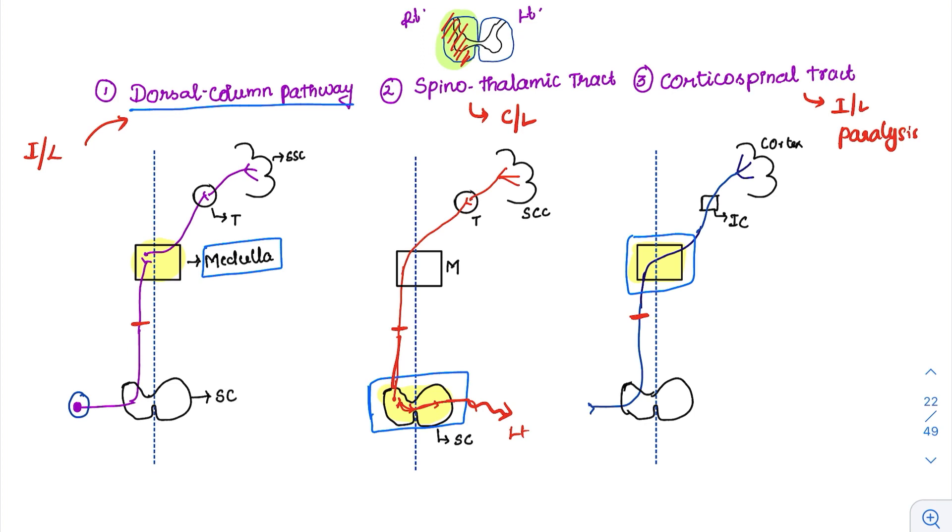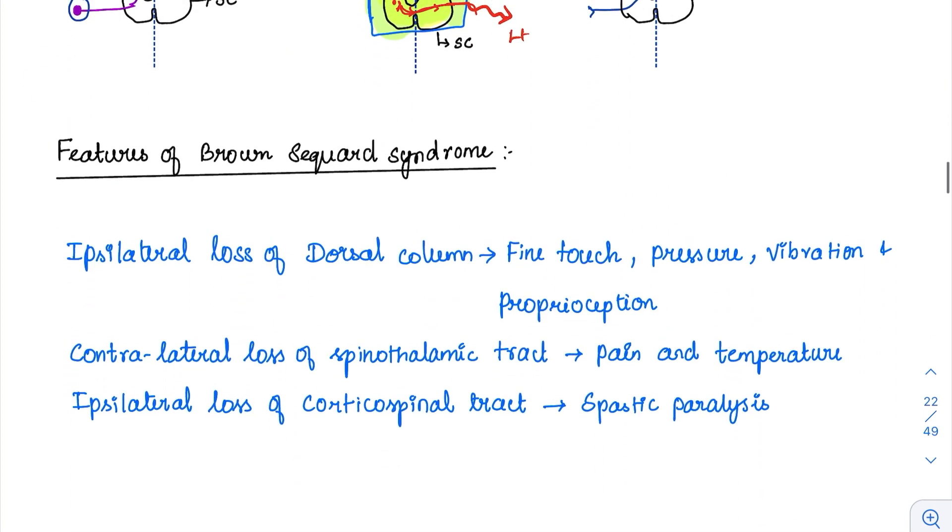Now let us discuss the features of it. So features of Brown-Séquard syndrome: there is ipsilateral loss of dorsal column. What are the sensations carried by it? Fine touch, pressure, vibration and proprioception.